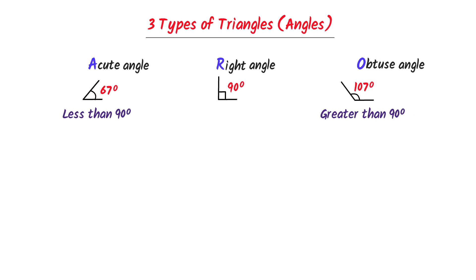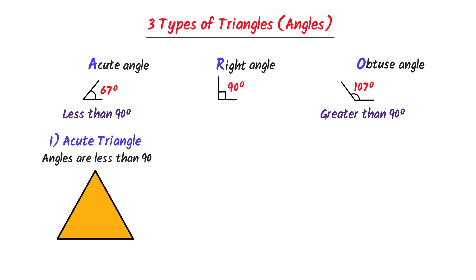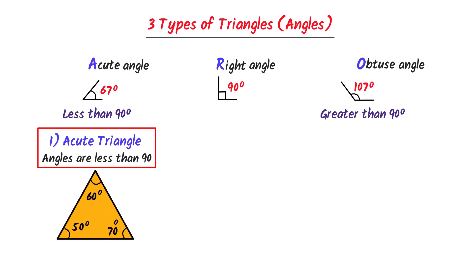On the basis of angles, the first type of triangle is the acute triangle. Those triangles in which all the angles are less than 90 degrees are called acute triangles. For example, in this triangle, this angle is 50 degrees, this angle is 70 degrees, and this angle is 60 degrees. All the angles are less than 90 degrees, so it is an acute triangle.